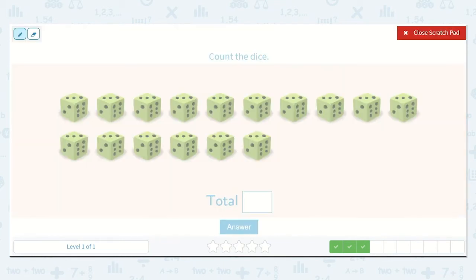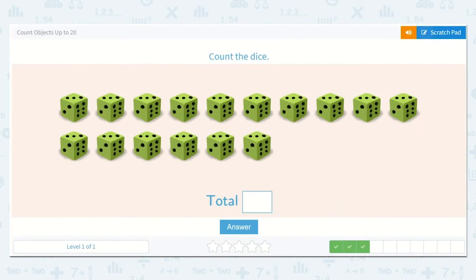Next, they would like us to count the dice. 1, 2, 3, 4, 5, 6, 7, 8, 9, 10, 11, 12, 13, 14, 15, 16. Our total is 16. That is a 1 and a 6.